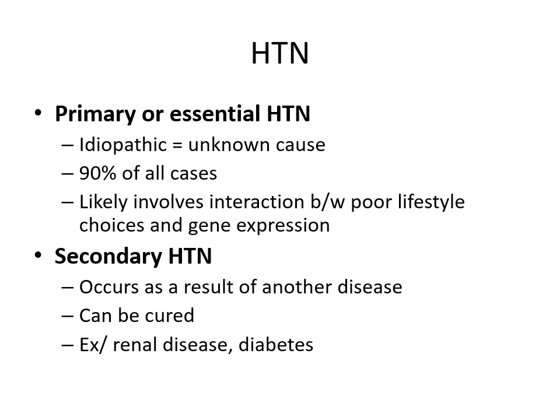We have different types of hypertension. Primary or essential hypertension is idiopathic — it has an unknown cause — and represents 90% of all cases, likely involving an interaction between poor lifestyle choices and gene expression. Secondary hypertension occurs as a result of another disease process and can be cured. For example, if someone has renal disease or diabetes, treating that underlying condition will allow blood pressure to return to a normal range.